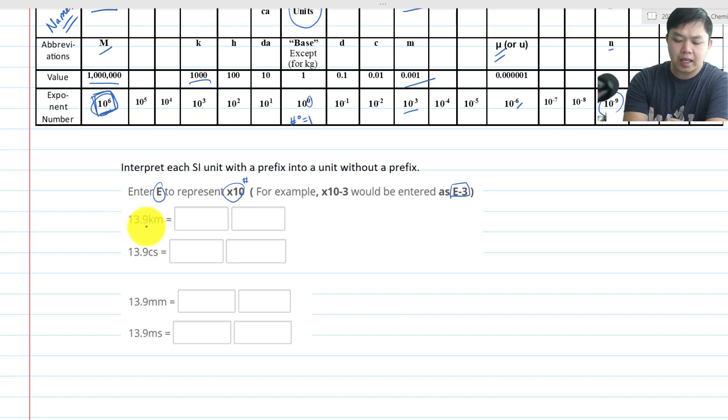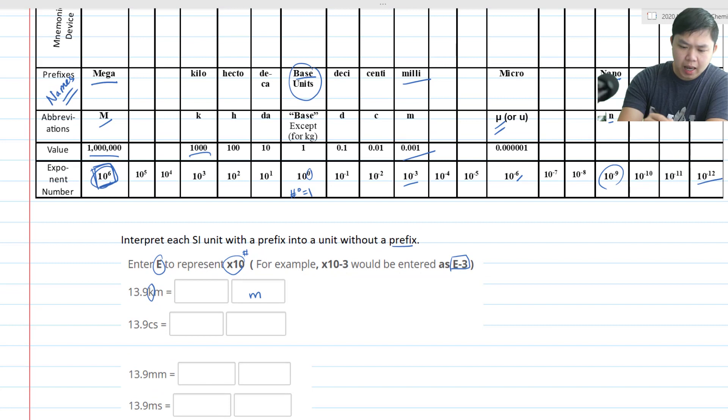Here we have 13.9 kilo or kilometer. What is kilo going to be? And we're going to interpret without the prefixes. So of course we know this is going to be meter. So what's K? K is right here, 10 to the third power.